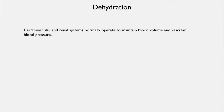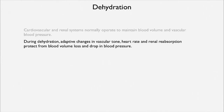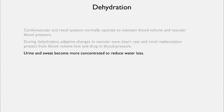Dehydration — water loss. The issue of water in the tissues is intimately tied to circulation, and cardiovascular and renal systems are normally operating to maintain a normal blood volume and vascular blood pressure. During dehydration, there are adaptive changes in vascular tone, heart rate, and renal reabsorption, and these protect from loss in blood volume and from a drop in blood pressure. Urine and sweat become more concentrated to reduce water loss.